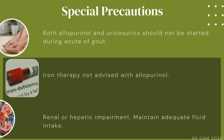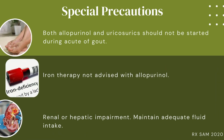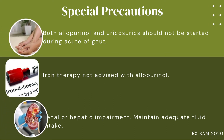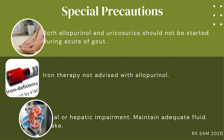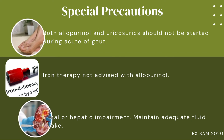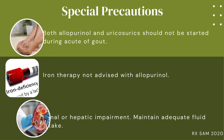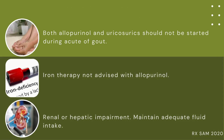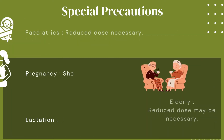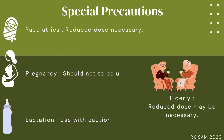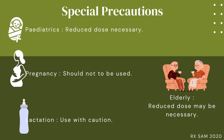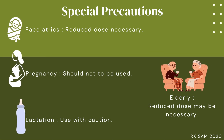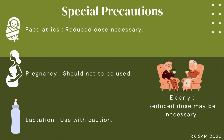Special precautions: Both allopurinol and uricosurics should not be started during an acute attack of gout. Iron therapy is not advised with allopurinol. Renal or hepatic impairment requires maintaining adequate fluid intake. Pediatrics require a reduced dose. Pregnancy: should not be used. Lactation: use with caution. Elderly: reduced dose may be necessary.